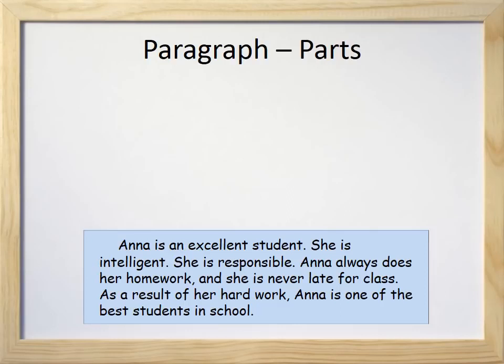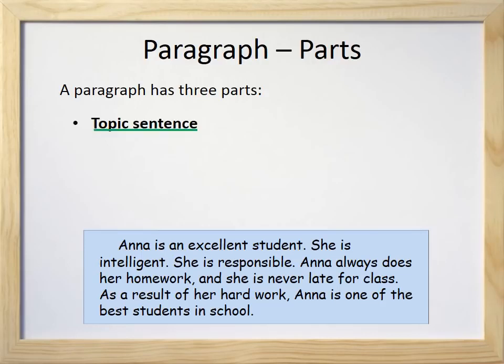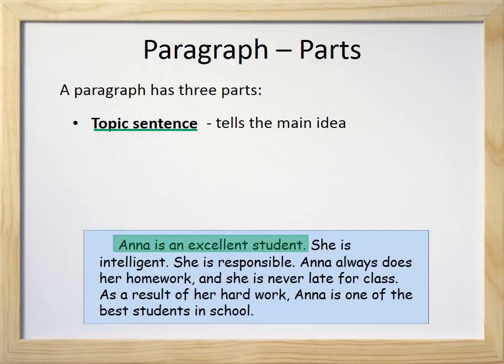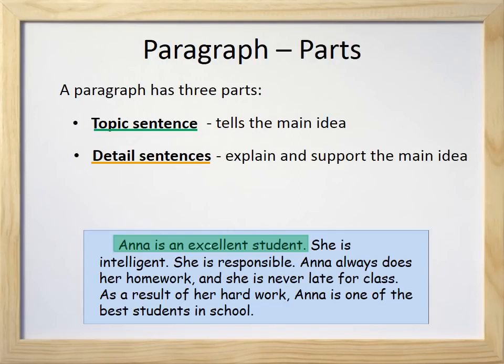So how many parts does a paragraph have? A paragraph has three parts. The first part is a topic sentence. This tells the main idea, or what the paragraph is about. The topic sentence in our paragraph about Anna is: Anna is an excellent student. That sentence tells us what the rest of the paragraph is about. The next part of a paragraph is the detailed sentences. These explain and support the main idea. Our example about Anna has three detailed sentences that explain and support why Anna is an excellent student.